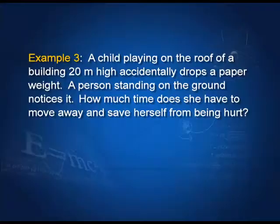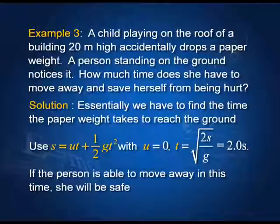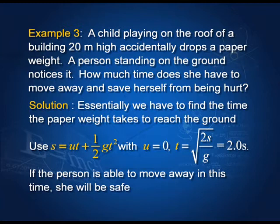A child playing on the roof of a building 20 meters high accidentally drops a paper weight. A person standing on the ground notices it. How much time does he have to move away and save himself from being hurt? We have to find the time the paper weight takes to reach the ground. With u = 0, g = 10 m/s², we get t = 2 seconds. So if the person can move away in 2 seconds, they would be safe.